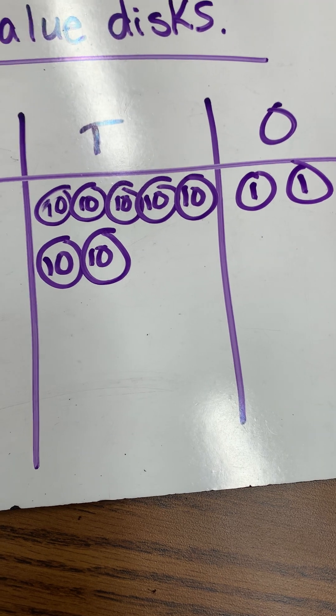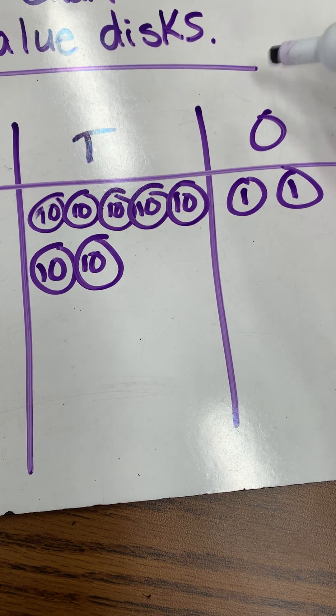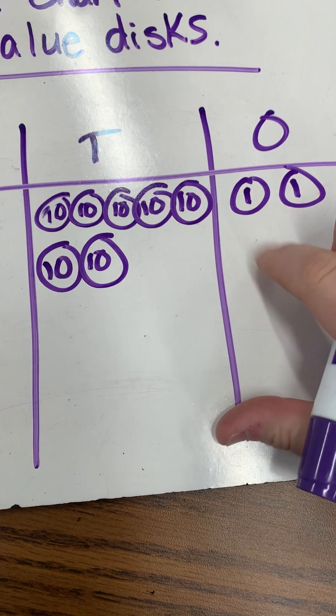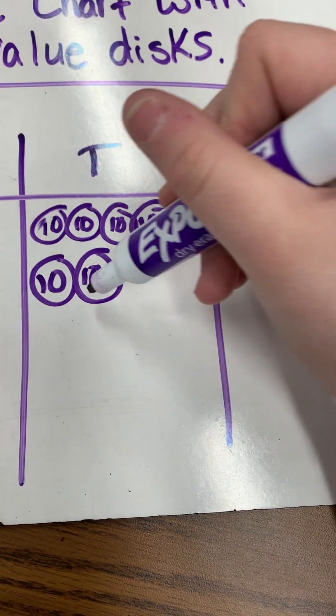Okay, so we have 72 and we need to subtract 19. So we always start from the ones place. I do not have 9 that I can take away from this, so I need to unbundle a 10.